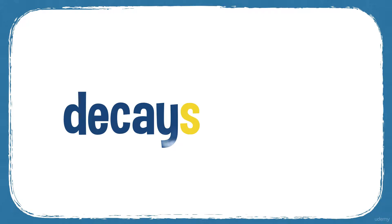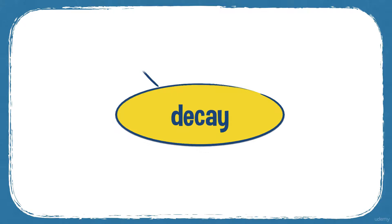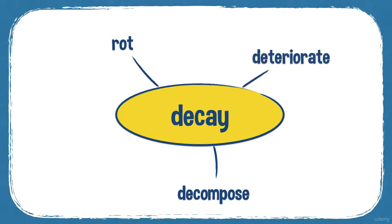Decay is a verb — decays, decaying, decayed — and also a noun. Some synonyms for decay: rot; decompose, particularly with bodies; and deteriorate, which is useful with buildings — so the theatre deteriorates.